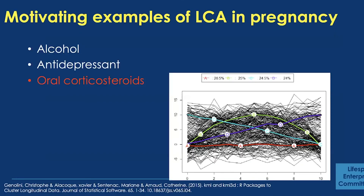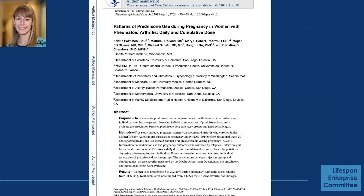The last example I want to show is one with oral corticosteroids — this is Dr. Palmston's work. What was really interesting is that the two exposures I showed before were more chronic in nature, whereas oral corticosteroids are taken on a PRN or as-needed basis. The question was whether you could still fit these trajectories with something that has a much more sporadic profile of use, rather than a smooth distribution.